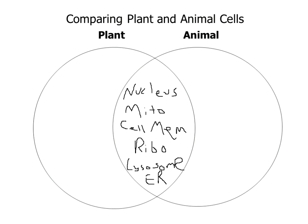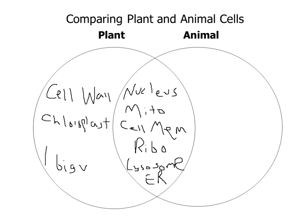What are the two big differences that plant cells have that animal cells don't? Cell wall and chloroplast. You could also say plant cells have one big vacuole versus many small vacuoles in animal cells. They both have mitochondria and cytoplasm, so those aren't differences.